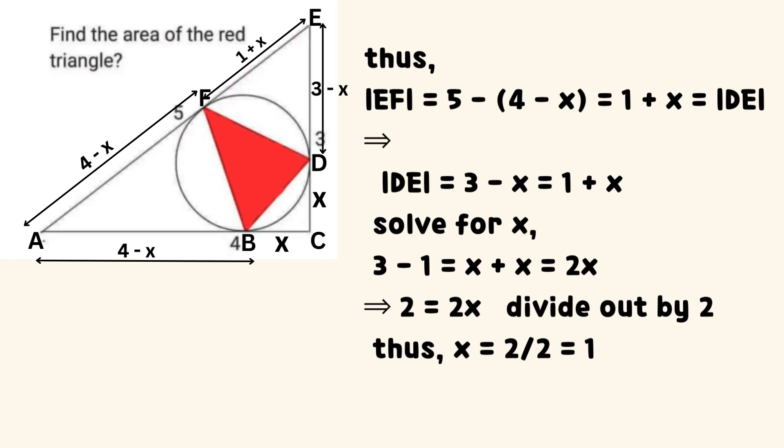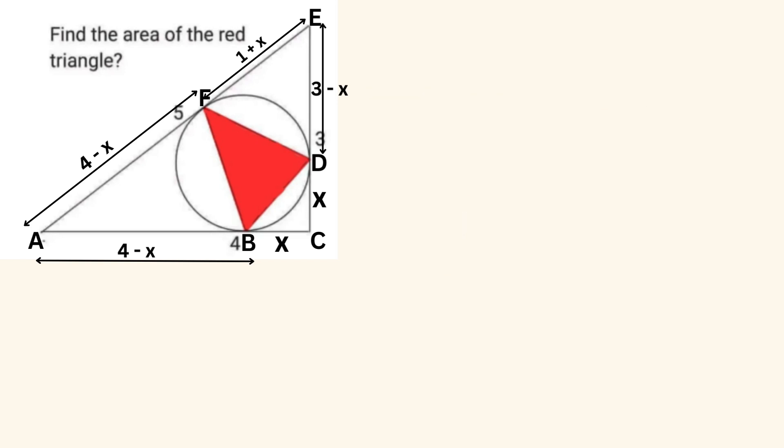Solve for X. We have 3 minus 1 equals 2 times X, thus 2 equals 2X. Dividing the equation by 2 gives X equals 2 divided by 2, which equals 1.